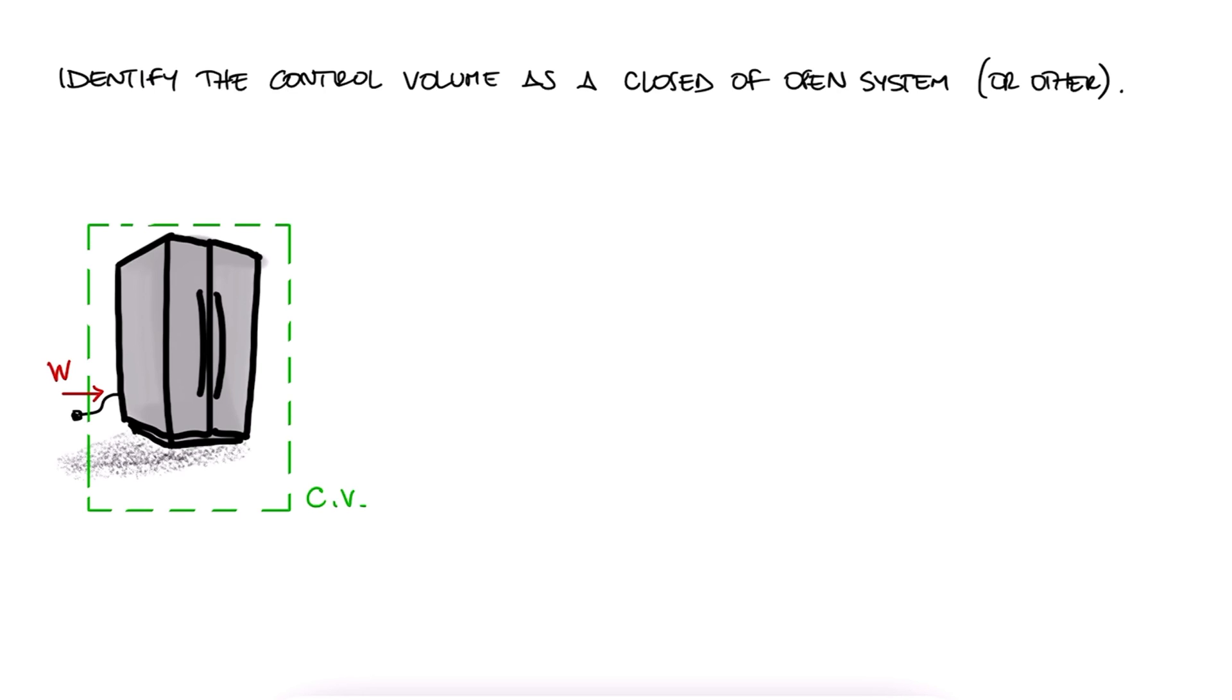And what about mass? Well, we'll learn more about fridges and air conditioning systems in this course, but at least here, we're not seeing any mass leave or enter our control volume. Therefore, the system is a closed system.